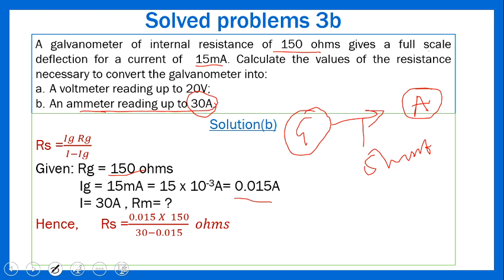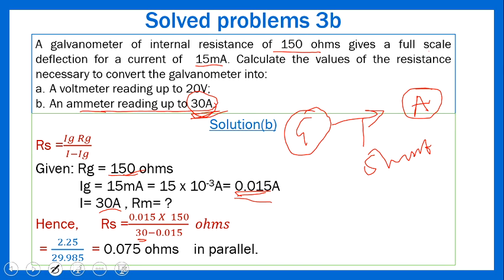Calculating: numerator = 0.015 × 150 = 2.25; denominator = 0.030 − 0.015 = 0.015. Dividing: RS = 2.25 / 0.015 = 150... Wait, simplifying correctly: RS = 0.015 × 150 / (30 − 0.015) = 2.25 / 29.985 ≈ 0.075 ohms in parallel, since a shunt is connected in parallel to the galvanometer.